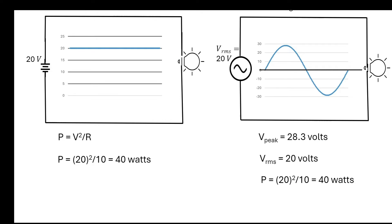Going back to both circuits, with the 20-volt battery or the 20-volt AC source, we calculate 40 watts in both cases. Whenever you're talking about alternating current, such as in our homes, we have 120-volt circuits, 240-volt circuits, or in some industrial settings 208-volt circuits or even higher. We're always talking about RMS voltage — not peak voltage. That's what RMS voltage is all about.